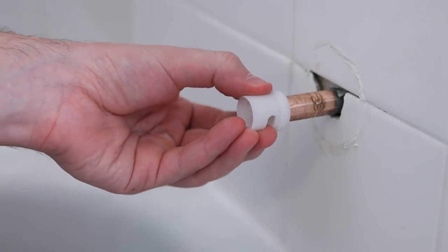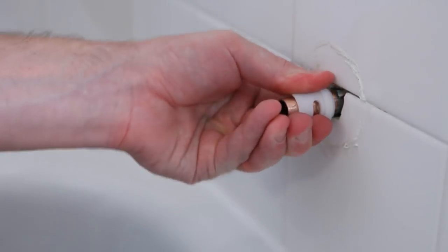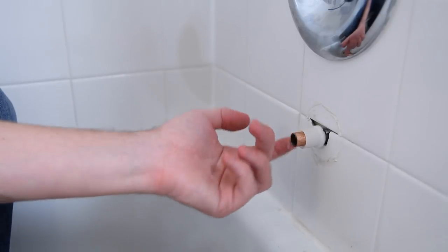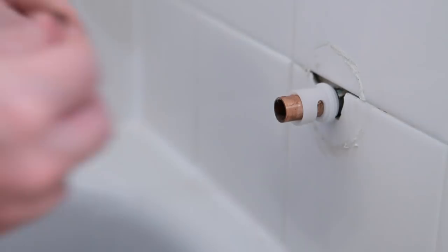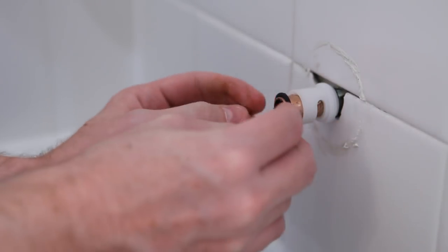Next, slide the adapter onto the stub out nipple with the threads toward the wall. Now, lubricate the stub out nipple at least a half inch from the end of the nipple. Then, slide the o-ring onto the stub out nipple tubing at least a half inch from the end of the nipple.